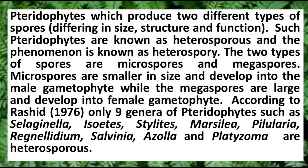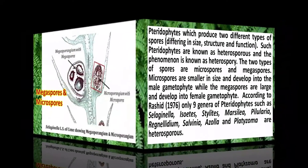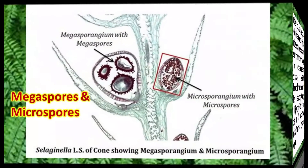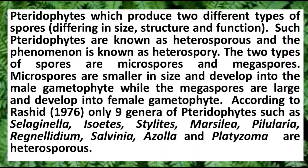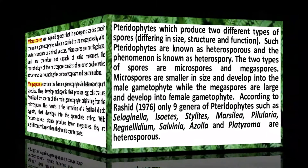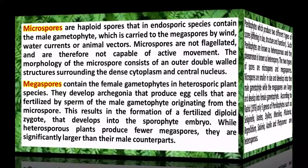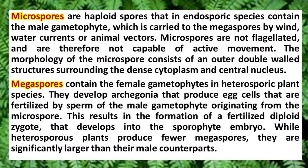Pteridophytes are both homosporous and heterosporous. The best examples of heterosporous pteridophytes are Selaginella, Isoetes, Marsilea, Salvinia, and Azolla. These plants produce two types of spores, and that condition is called heterospory.